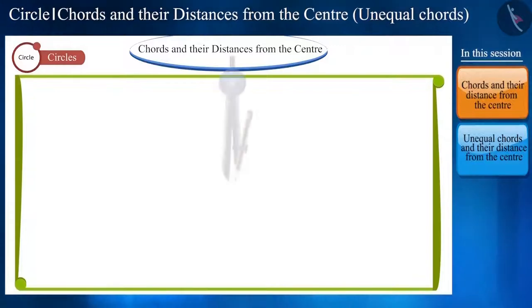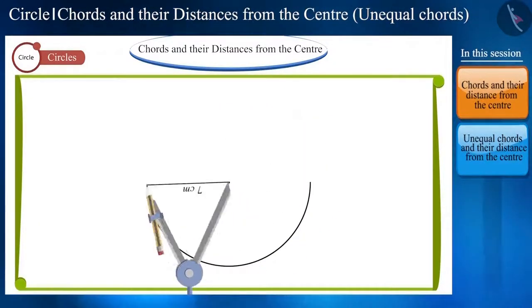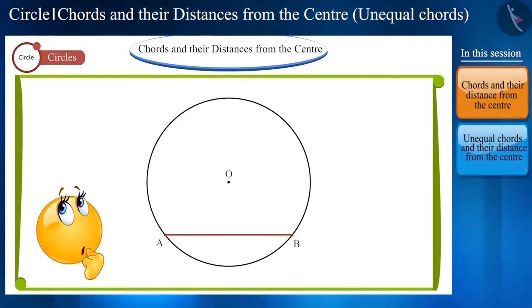Friends, let's draw a circle with radius 7 cm whose center is O. If we take two points A and B on it, then the line segment AB will be called one of its chords. Can you tell how far is the chord AB situated from the center O? Let's understand it.